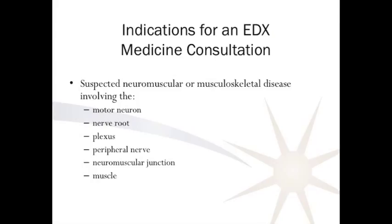I'm here today to give a talk about EMG and nerve conduction studies, and how to order them and how to interpret them. We use EMG and nerve conduction studies when we suspect a disease involving the peripheral nervous system — anywhere from the motor neuron out to the nerve root, the plexus, peripheral nerve, neuromuscular junction, and muscle.